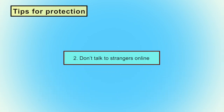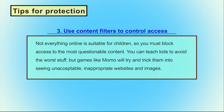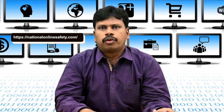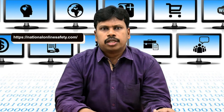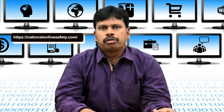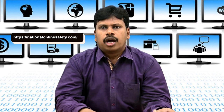Don't talk to strangers online — it will solve many problems. Use content filtering to control access, as not everything online is suitable for children. You must block access to the most questionable content. Games like MOMO try to trick children into seeing unacceptable and inappropriate websites and images. For better understanding and awareness, advise your children to visit nationalonlinesafety.com, a website containing many resources to help create awareness for children, parents, and adults.